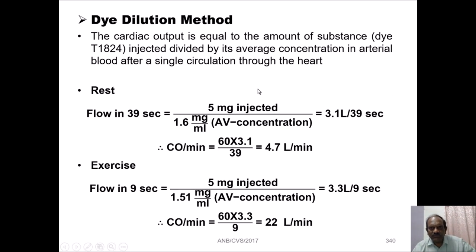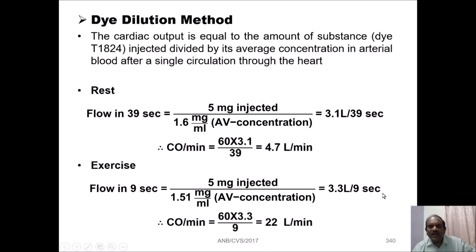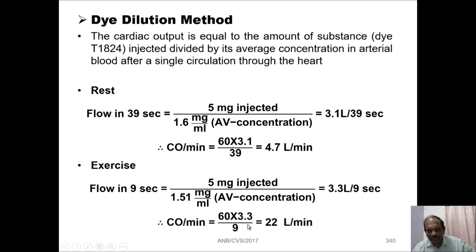During exercise, the time taken for the substance to circulate within the body is only 9 seconds. The flow for 9 seconds: 5 mg divided by an average concentration of 1.51 mg per ml gives 3.3 liters per 9 seconds. Converting: 60 multiplied by 3.3 divided by 9 gives a cardiac output of 22 liters per minute. This indicates that cardiac output is much higher during exercise compared to rest.